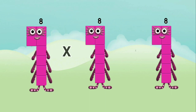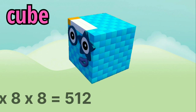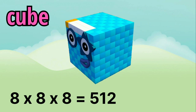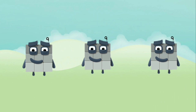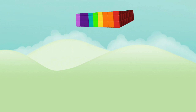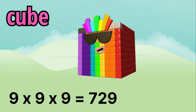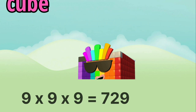8 x 8 x 8 equals 512. 9 x 9 x 9 equals 729.